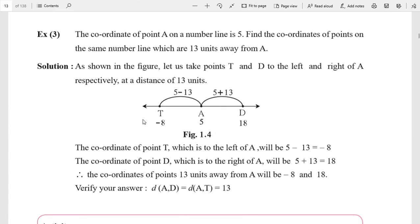Next, third example. The coordinates of point A on a number line is 5. Find the coordinates of points on the same number line which are 13 units away from A.